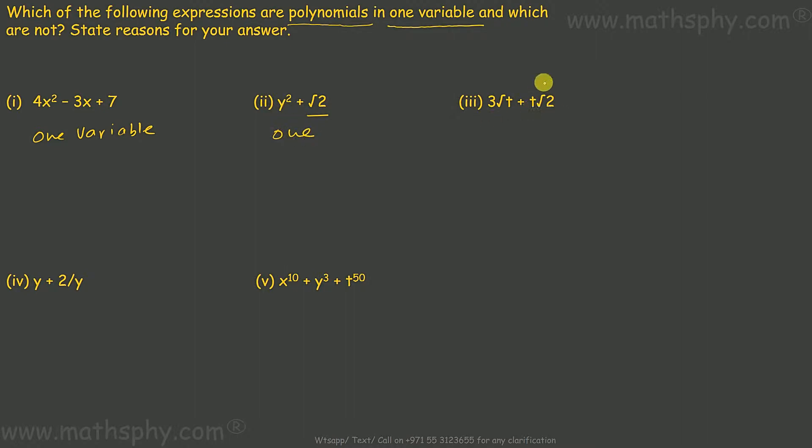This one here, t has a power of 1 and constant is alright. But look at this term here: it says 3√t + t√2. This is alright. This one here, this √t can be written as 3 into t to the power 1/2.